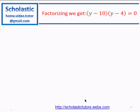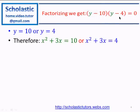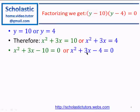From the factors, y = 10 or y = 4. But y = x² + 3x, so we get two new equations: x² + 3x = 10, or x² + 3x = 4. Rearranging: x² + 3x - 10 = 0 or x² + 3x - 4 = 0. We now solve these two quadratic equations to find the final roots.